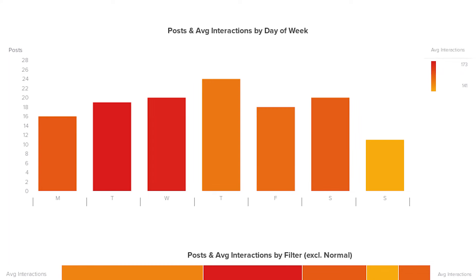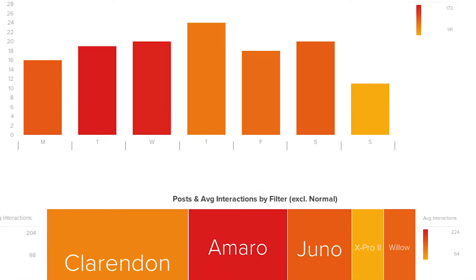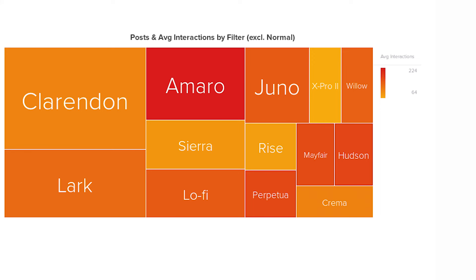Now this chart by day gives us some clearer insights. We can tell that posts on Tuesday and Wednesday receive the highest average number of interactions, so this could tell us that we should post more on those days. And finally we can see that the AMRO filter appears to be most effective in gaining engagement, so we could try applying it to more posts to see if interactions increase.